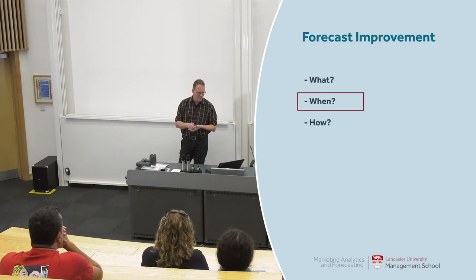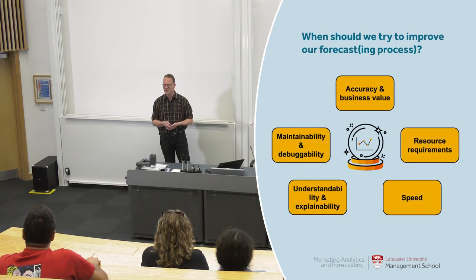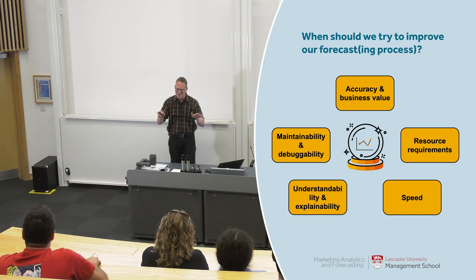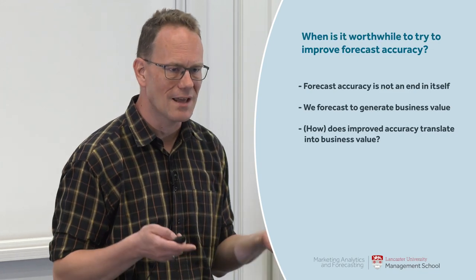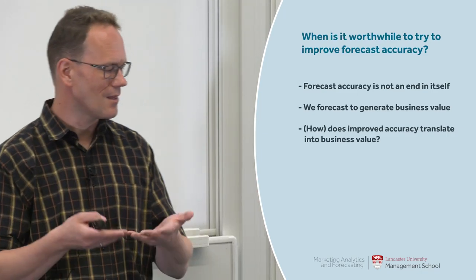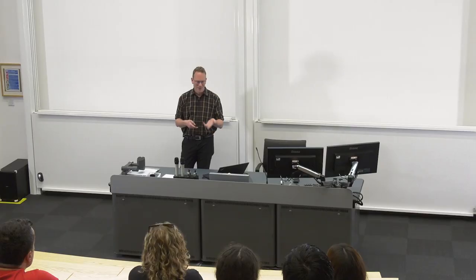Let's go on to the when of forecast improvement. When should we actually try to improve our forecast? Accuracy is not an end in itself — it's a means to an end, and the end is business value. We're not forecasting just for the joy of it. So how does improved accuracy translate into business value? We have a forecast and we suspect that if we improved accuracy, we might generate more business value. How do we find out whether that hunch is actually correct?